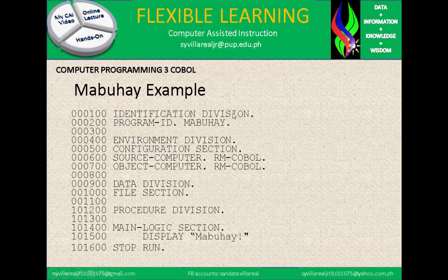In the environment division, under the configuration section, you specify what COBOL you are going to use — here they use RM COBOL for both source and object computer. Then we have the data division with the file section — no data was put here in this example. Then the procedure division with the main logic section: display 'Mabuhay'. Displaying on the screen uses the code DISPLAY only, and what you need to do is put the text in double quotes — then type what you need to see on the screen, like 'Mabuhay'. Then STOP RUN.